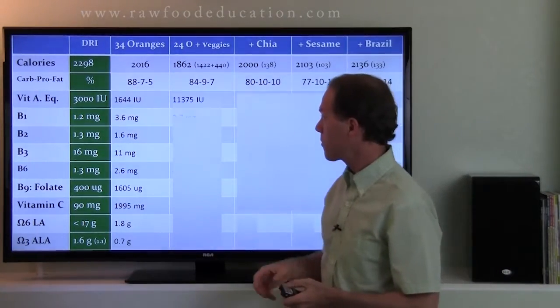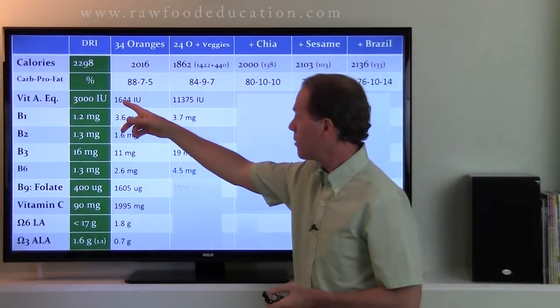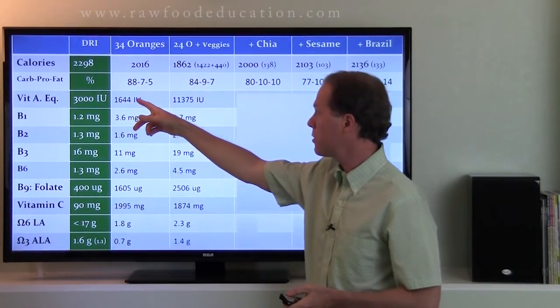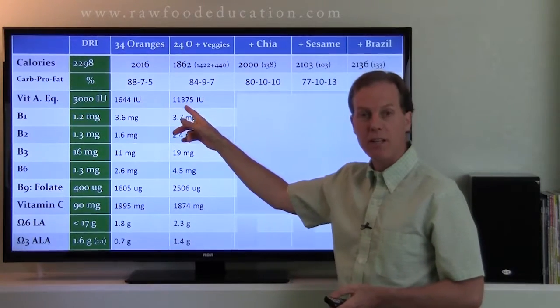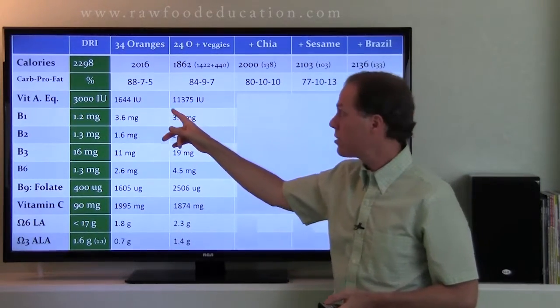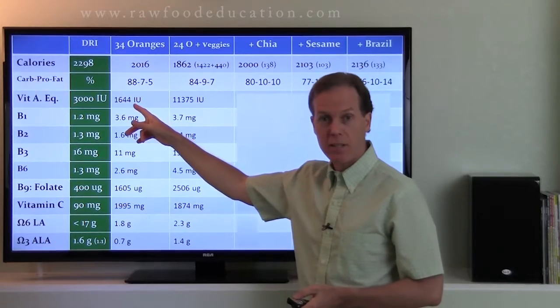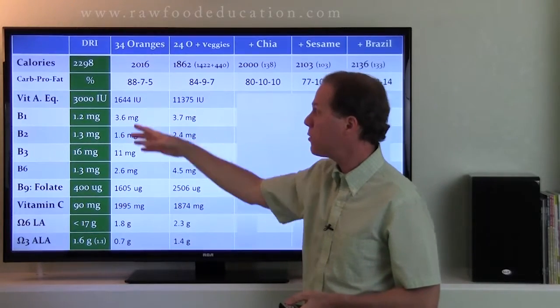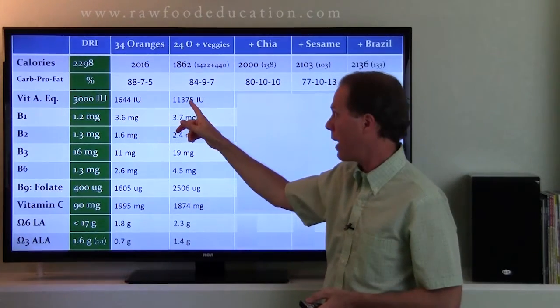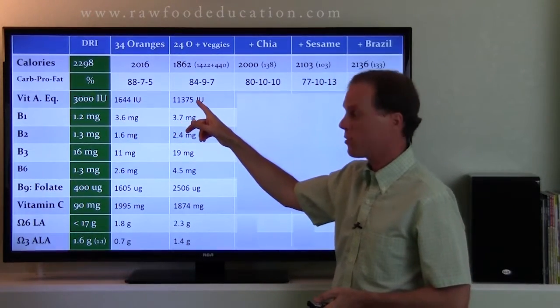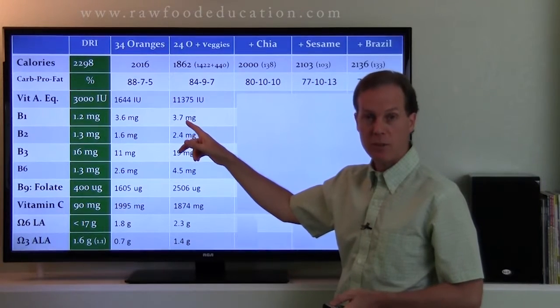So how did we do now? So look at that. We went from 1,600 IUs of vitamin A, in this case beta-carotene, to over 11,000. Some fruits are higher in beta-carotene, like cantaloupes. If I had 2000 calories worth of cantaloupes, I would have had about 30,000 IUs. So I got 11,000. So there's lots of beta-carotene in the vegetables.